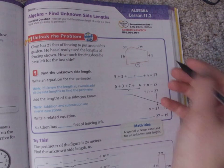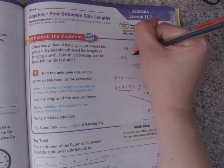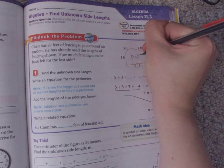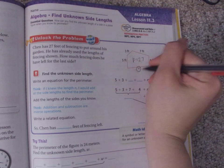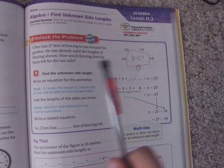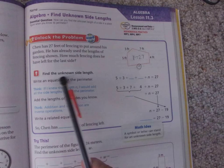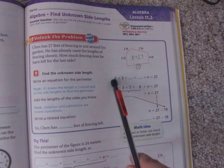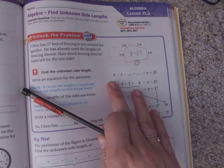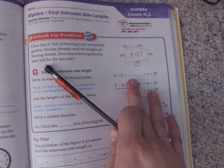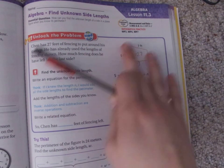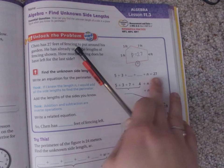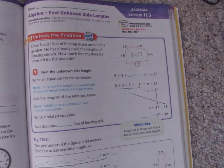We also know that the whole perimeter, so the perimeter around the whole thing, is 27 including this mystery number. So first, find the unknown side length. Write an equation for the perimeter. So remember, an equation is like 5 plus 3 plus our other two numbers plus n equals 27. So this is our equation.